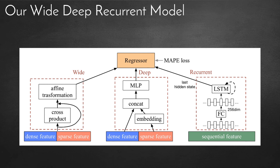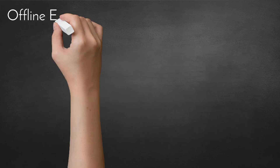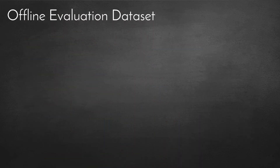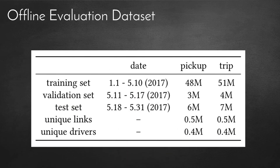This model is trained with MAPE loss using stochastic gradient descent. The offline evaluation is on a real, large-scale dataset collected on the DiDi platform. In total we have 57 million trips, a road network with 500,000 links, and 400,000 active drivers.